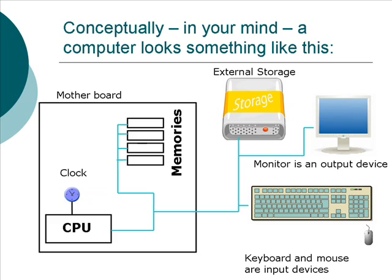Here is a loose diagram of what a computer looks like conceptually. There is a main board in many computers — a central board that contains most of the stuff that runs the computer — and that board is called the motherboard. On it resides a CPU, the central processing unit, attached to memories. That blue line is meant to represent what's called a bus — the line that connects everything. There's also an external clock on the CPU.